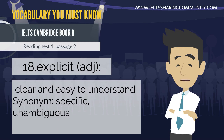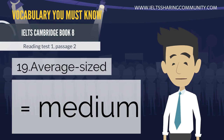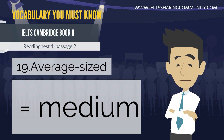18. Explicit — clear and easy to understand. Synonyms: specific, unambiguous. 19. Average size equals medium.